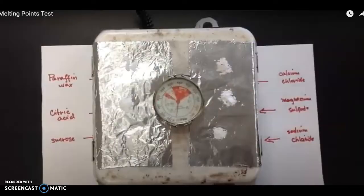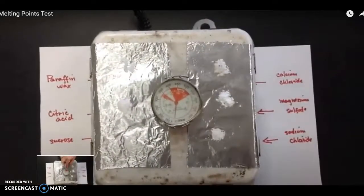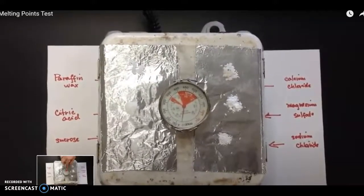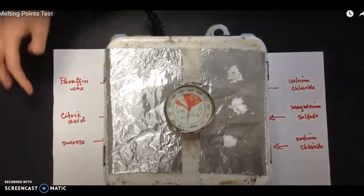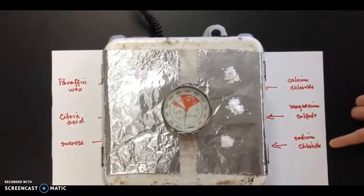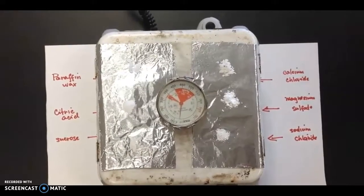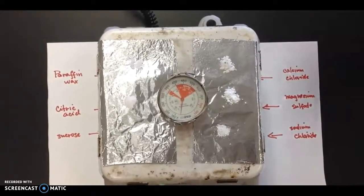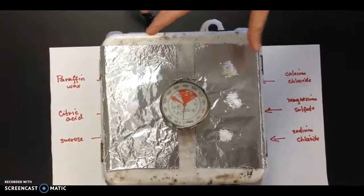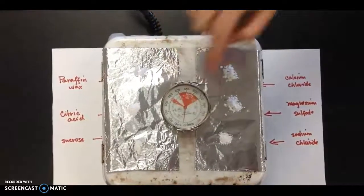For this next part of the lab, we are going to be looking at six substances and recording their melting point. We have six samples: paraffin wax, citric acid, and sucrose on one side; calcium chloride, magnesium sulfate, and sodium chloride on the other. We are going to wait for this hot plate to heat up and observe the changes of these compounds using this thermometer.